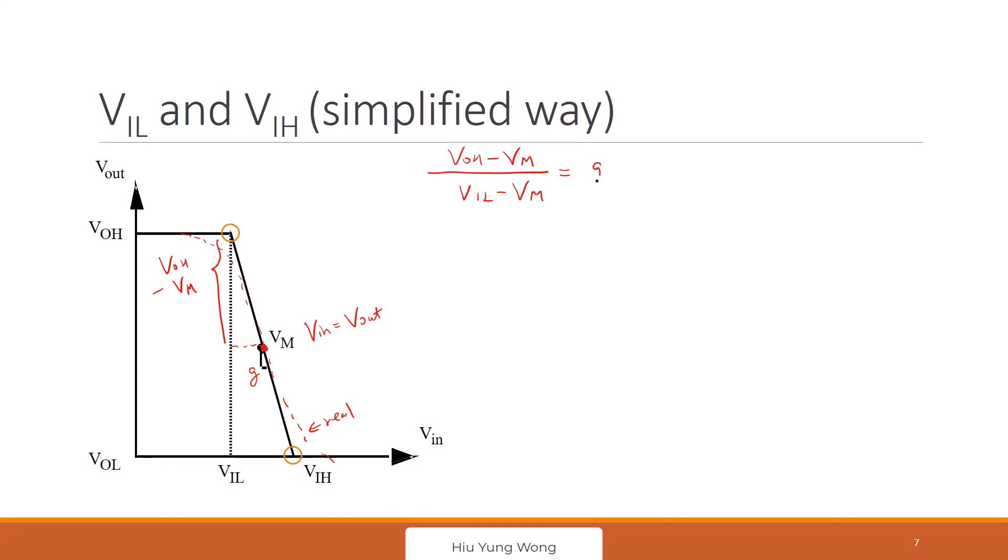Must be equal to G, right? Because this one, this part is VIL minus Vm, correct? Is this okay? Any questions? Then I already know what is Voh, right? I also know Vm. I also know Vg.